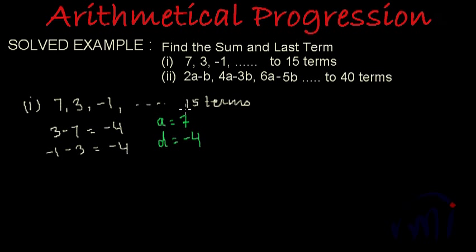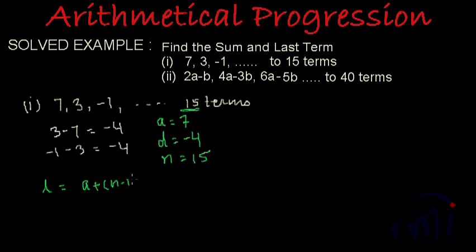We have a total of 15 terms, so n is equal to 15. We have to find the sum and the last term. The formula for the last term is: l equals a plus (n minus 1) times d. Here we have to find the 15th term, so substituting: a is 7, n is 15, and d is minus 4.